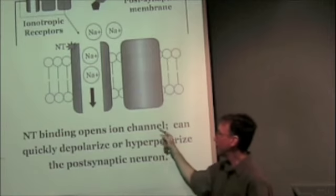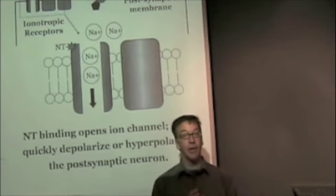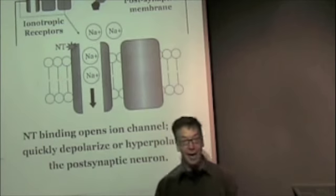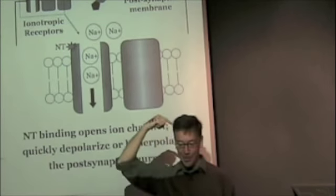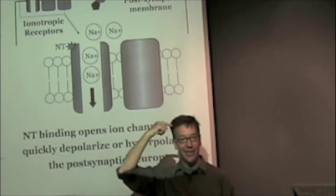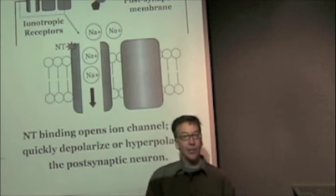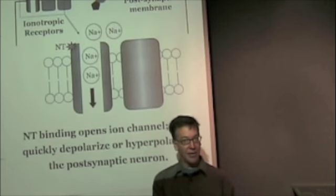And the entry of a positive ion into the negative intracellular space will depolarize the next neuron. So this kind of receptor, this class of receptors where the binding of neurotransmitter provokes a change in shape of the receptor such that ions can pass through and redistribute across the membrane. These types of receptors are called ionotropic receptors.